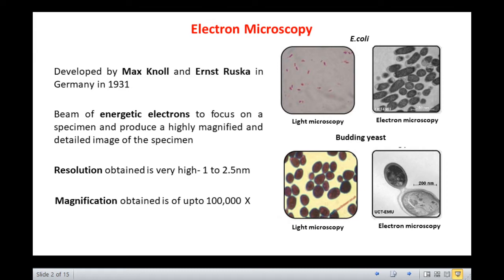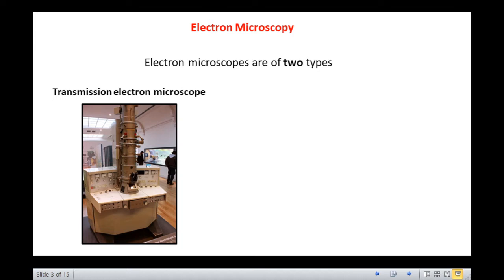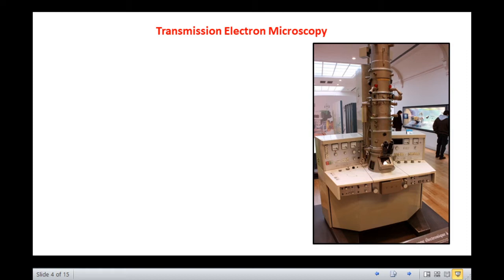So students, let us move on to learn more about the electron microscopes. The electron microscopes are of two types: transmission electron microscopes and scanning electron microscopes. In this lecture, we will only talk about transmission electron microscopy in detail.